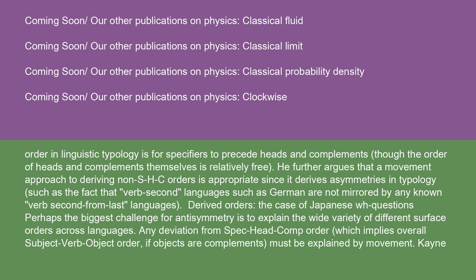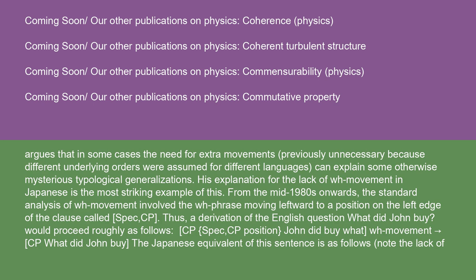Derived orders — The case of Japanese WH questions: Perhaps the biggest challenge for antisymmetry is to explain the wide variety of different surface orders across languages. Any deviation from spec-head-comp order, which implies overall subject-verb-object order if objects are complements, must be explained by movement. Kayne argues that in some cases the need for extra movements can explain some otherwise mysterious typological generalizations. His explanation for the lack of WH movement in Japanese is the most striking example. From the mid-1980s onwards, the standard analysis of WH movement involved the WH phrase moving leftward to a position on the left edge of the clause called spec, CP.